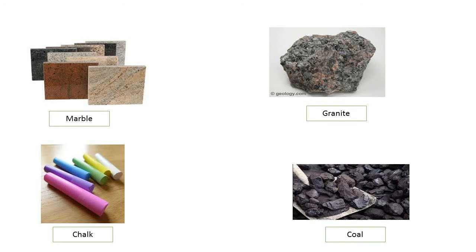بچو کنکر، sand اور soil مل کر rocks بناتے ہیں۔ Rocks بہت useful materials ہیں اور ہم انہیں مختلف طریقوں سے استعمال کر سکتے ہیں۔ سب سے پہلے large rocks کو dynamite کی مدد سے اڑایا جاتا ہے، اس کے بعد انہیں hammer یعنی ہتھوڑا اور چھینی لگی machine سے کاٹا جاتا ہے۔